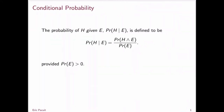Recall that the definition of conditional probability: for two formulas H and E, the probability of H given E is defined using this ratio. The probability of H given E is the probability of H and E divided by the probability of E, assuming that the probability of E is greater than zero.